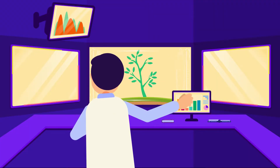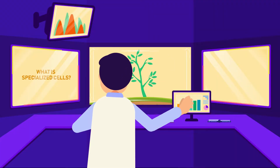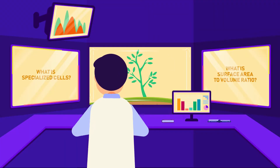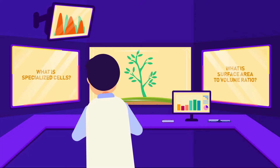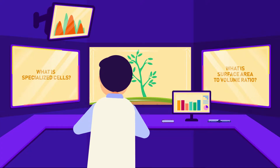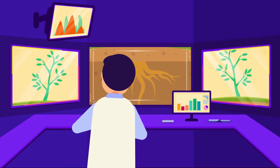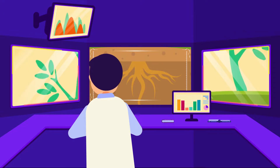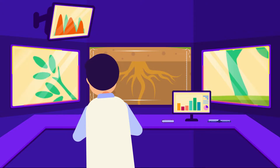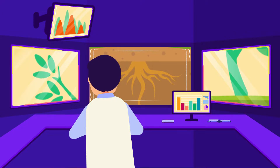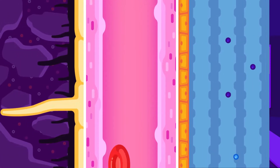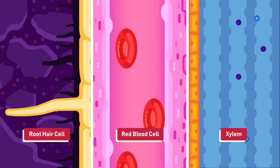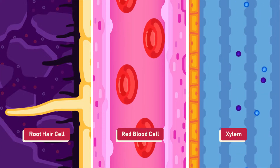What are specialised cells and surface area to volume ratio? The cells that make up living things have many different types. They differ in terms of shape and size and are adapted to perform specific functions. Some examples of these cells are the root hair cell, red blood cell and the xylem vessels.